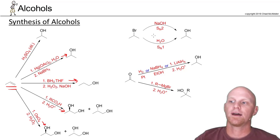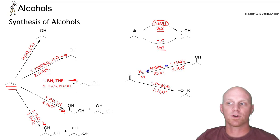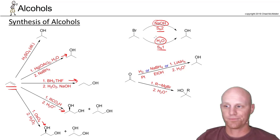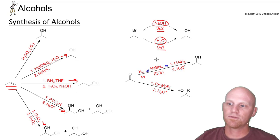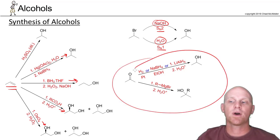We've also got SN1 and SN2. If you use a strong nucleophile like NaOH, you can do SN2 backside attack, as long as we don't have a tertiary halide. And if we use something weak like water, we can do SN1 and make an alcohol instead. Those are review. But we've got two new ways to make alcohols that you haven't learned up until now, and we're going to spend a little more time on these two.